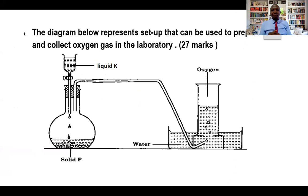By the end of this particular analysis, you'll have scooped 27 marks. First of all, attempt the questions before you look at the answers. Here you have the setup — you have liquid K and you have solid P. Both of those two reactants are reacting to produce oxygen gas. The gas is being collected over water. Let's try to analyze what are some of the questions that can be derived, that can be tested on preparation of oxygen gas.